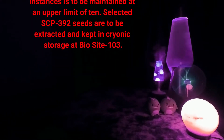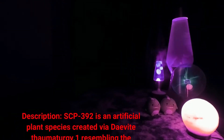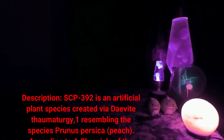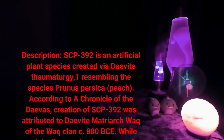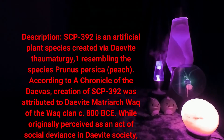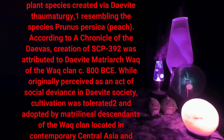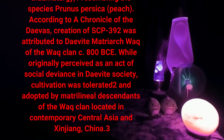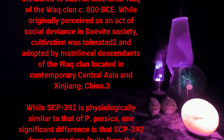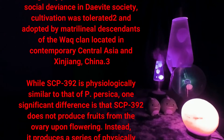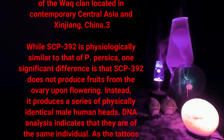Description: SCP-392 is an artificial plant species created via D-Vite thaumaturgy, resembling the species Prunus persica (peach). According to a chronicle of the D-Vites, creation of SCP-392 was attributed to D-Vite matriarch Waak of the Wa clan, circa 800 BCE. While originally perceived as an act of social deviance in D-Vite society, cultivation was tolerated and adopted by matrilineal descendants of the Wa clan located in contemporary Central Asia and Xinjiang, China.